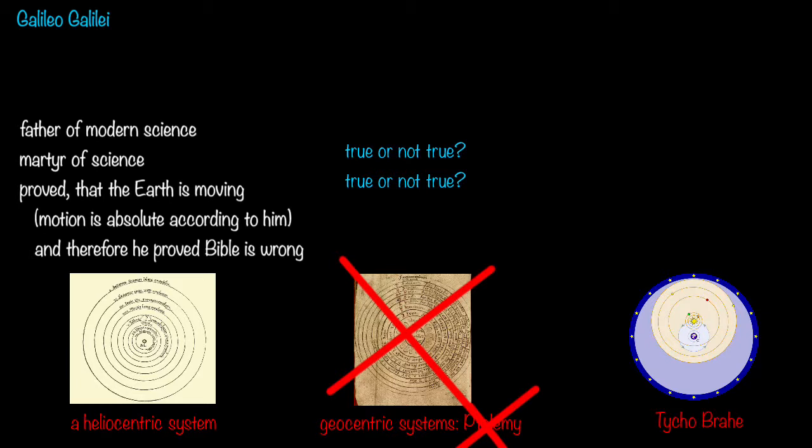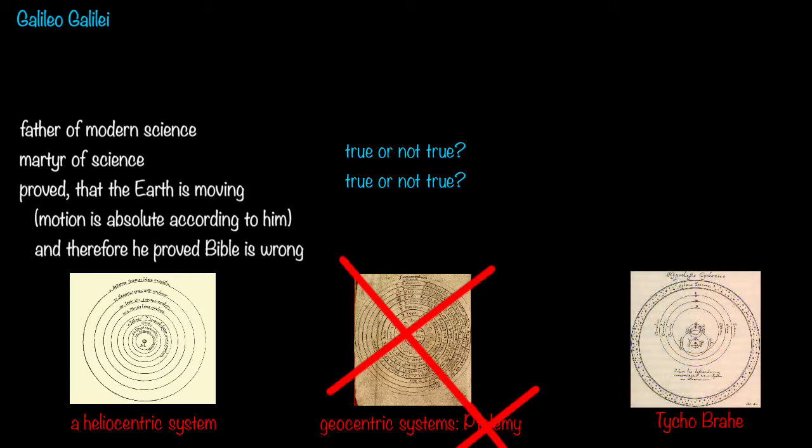So did Galileo disprove geocentric system? No. Geocentric system is still being used by scientists. He disproved only one very bad geocentric system, but the one which was as good as Copernicus, he didn't disprove. That system was only ignored. The point is that if you don't know the forces and Galileo Galilei didn't know them, there is no way to say anything about which body is moving and which not.